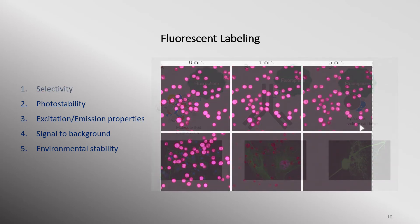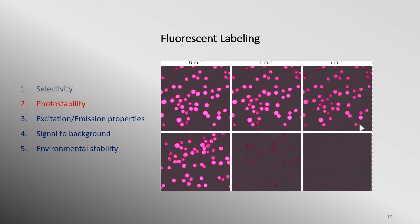Photostability is an indicator of how well the fluorescent signal is maintained with repeated exposure to illumination light. It would be difficult to work with fluorescent dyes that are not photostable, as you can lose your signal in the time that it takes to focus the microscope. This property of a fluorophore is an important factor to consider, especially if you want to perform time-lapse imaging.